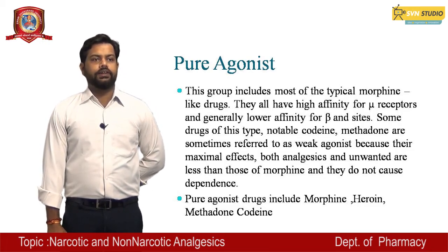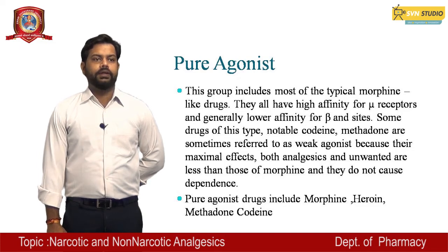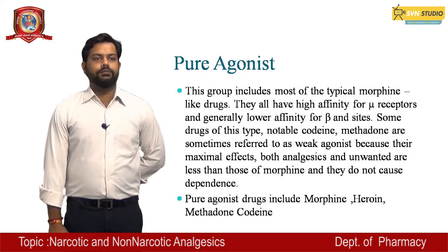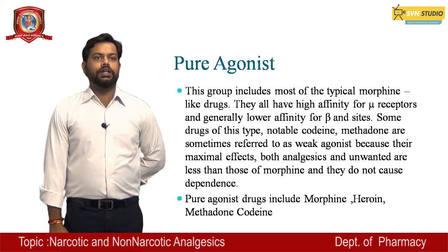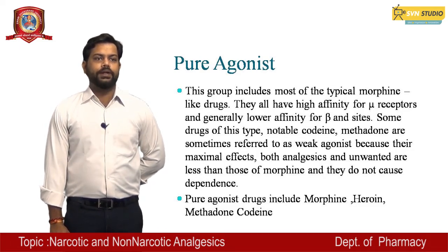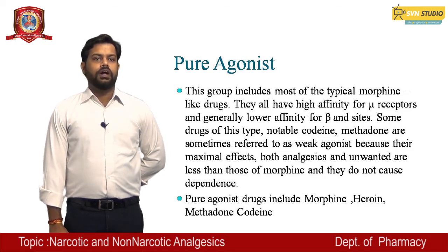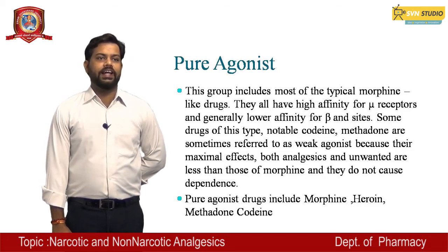Pure agonist drugs include morphine, heroin, methadone, and codeine. These drugs are pure agonists that show strong effects and produce analgesia, which may sometimes also have unwanted effects less than those of other drugs.